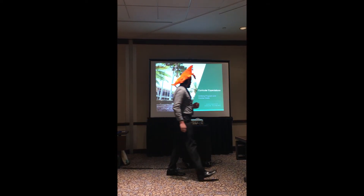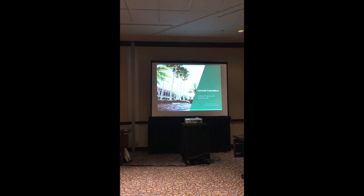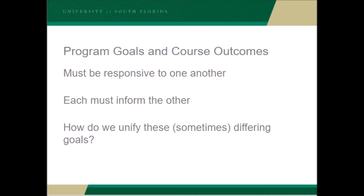What we're going to talk about is how we put this into play in a more material sense in the classroom through curricular expectations — in order to unify the goals of the program in the course. To get that bidirectional approach, the goals of the program and the course outcomes must be responsive to one another and inform each other.